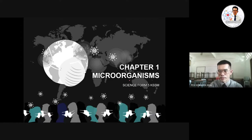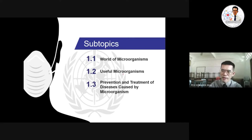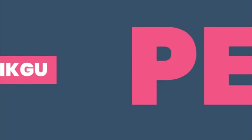Today we are going to start our first chapter — Chapter One: Microorganisms. In total we have nine chapters in the syllabus for Form 5 KSSM Science. There are three sub-topics we are going to learn in this chapter: first, the world of microorganisms, which we will cover in today's lesson; second, useful microorganisms; and third, prevention and treatment of diseases caused by microorganisms.